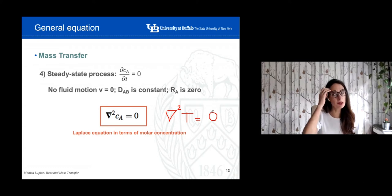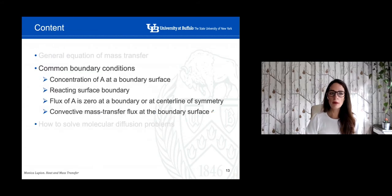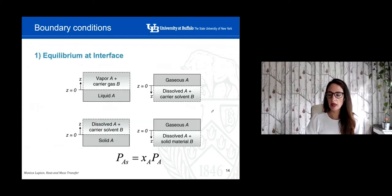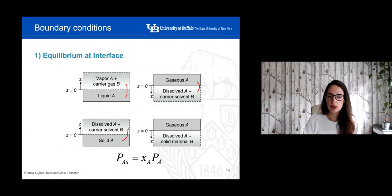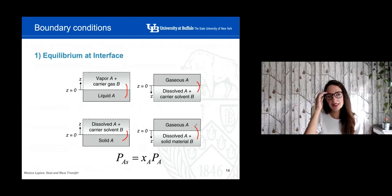We're going to see some examples of how to apply the different assumptions. Now let's move to the common boundary conditions. The first one: when we have an interface — such as between a liquid and a gas, a dissolved liquid in a solvent in equilibrium with a gas, a solid in equilibrium with a solvent, or a solid in equilibrium with a gas — we can apply equilibrium at the interface. We'll see this especially when we study heat transfer equipment. I'm not going to talk a lot about this now because it's a particular case we'll discuss in more detail in the last lecture.